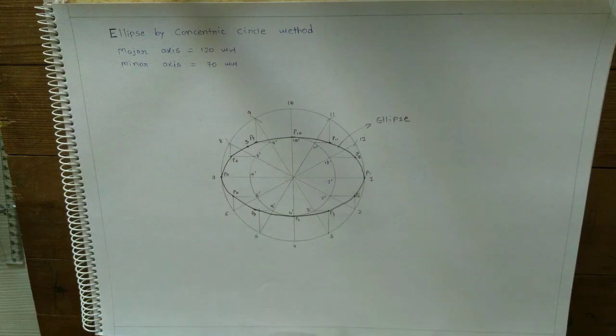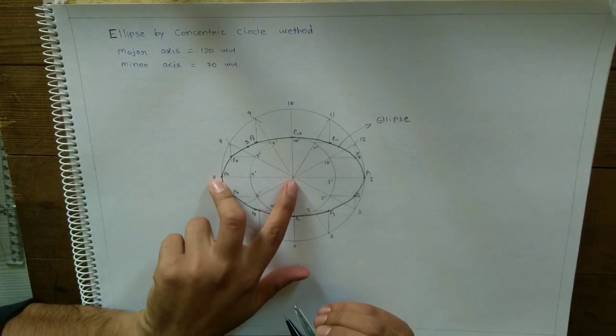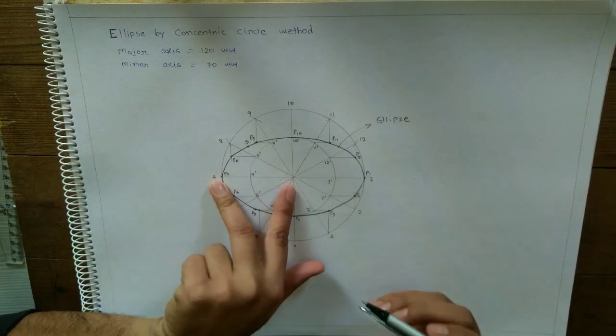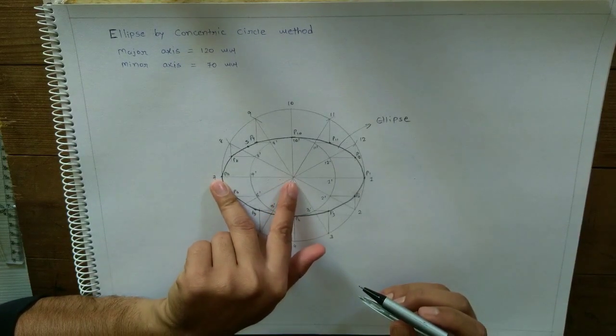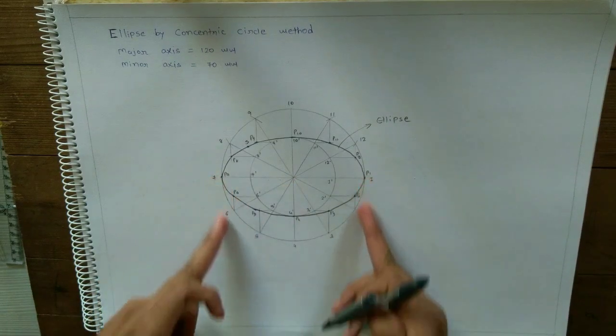Now remember one thing: to draw tangent and normal in ellipse, you must have focus points. For that, take this distance, that is the semi-major axis, half of the major axis. This is the major axis of ellipse.